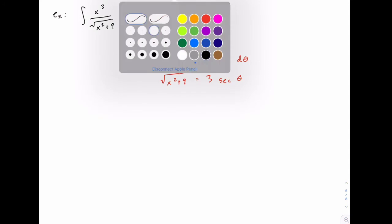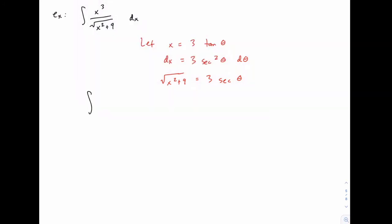So now when we substitute, let's see what happens. x cubed gets replaced with 3 tangent theta cubed, so the 3 cubed becomes 27 and then we have tangent cubed of theta. The square root of x squared plus 9 gets replaced with 3 secant theta, and dx becomes 3 secant squared theta d theta. Notice that the 3's cancel and one of the secants cancels, so we're left with 27 tangent cubed theta secant theta d theta.